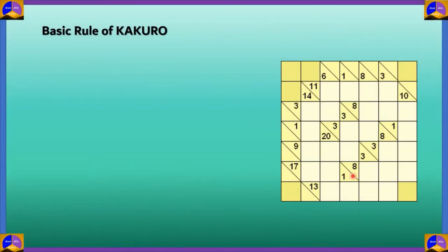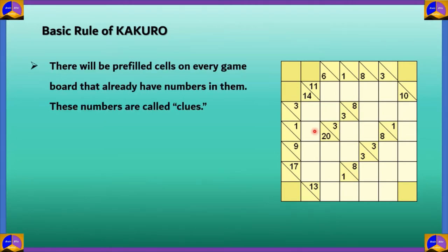There are many basic rules that you should keep in mind when you're solving a Kakuro puzzle. There will be pre-filled cells on every board that already have numbers in them. These numbers are called clues. For example, in this board, 6, 8, 14, 1, 9, etc. These numbers that are already inside the yellow squares, they are the clues.